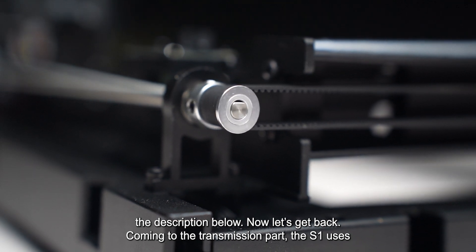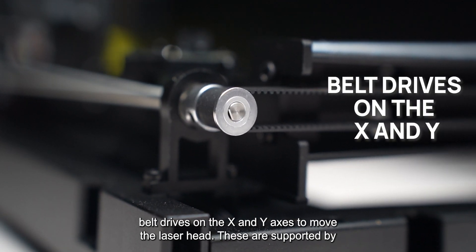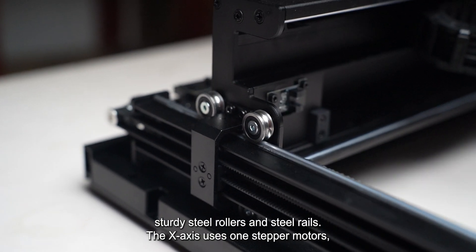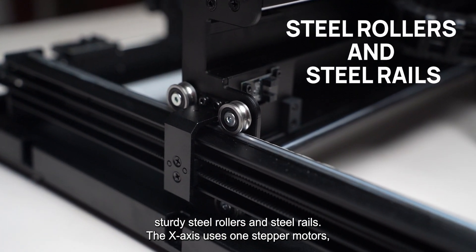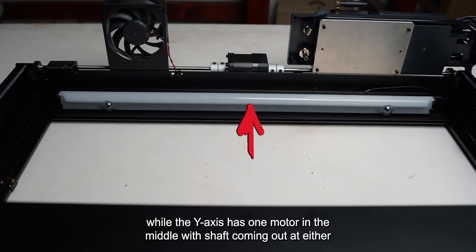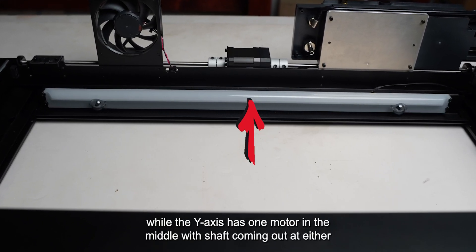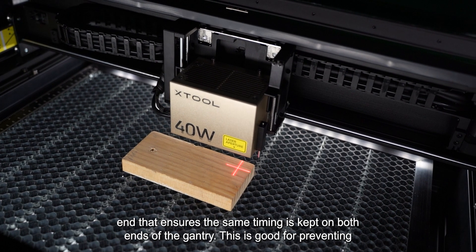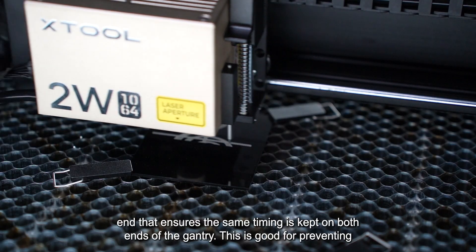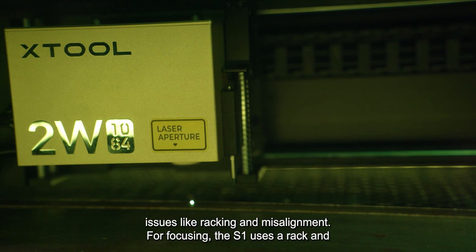Coming to the transmission part, the S1 uses belt drives on the X and Y axis to move the laser head. These are supported by sturdy steel rollers and steel rails. The X axis uses one stepper motor, while the Y axis has one motor in the middle with the shaft coming out at either end that ensures the same timing is kept on both ends of the gantry. This is good for preventing issues like racking and misalignment.